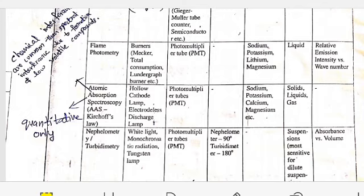Atomic absorption spectroscopy uses hollow cathode lamp and electrodeless discharge lamp. Photomultiplier tubes are used as detectors. Sodium, potassium, calcium, and magnesium are detected, and we can use solids, liquids, and gases.